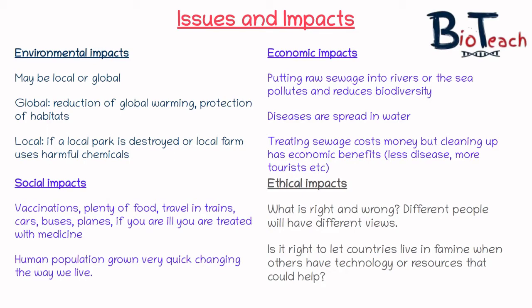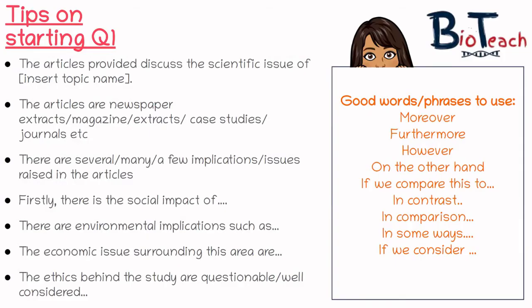Now that we've discussed those four impacts, here are some tips on starting question one. The articles provided by Pearson discuss the scientific issue of a specific area. I'd recommend starting with: 'These articles provided discuss the scientific issue of...' and then add your topic name — it could be genetic engineering, diesel fuels, pesticides, or whatever it might be. You then need to talk about the source of those articles, mentioning all three — they might be newspapers, journals, or a blog — and include that in your introductory paragraph.